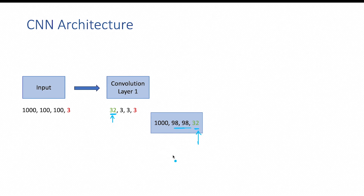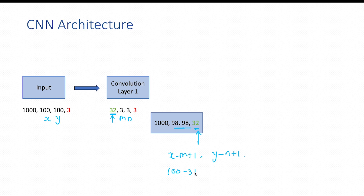The height and width of the feature maps are determined by the formula (x - m + 1) and (y - n + 1), where x and y are the height and width of the input image, and m and n are the height and width of the kernel. So 100 - 3 + 1 gives 98, resulting in feature maps of size 98 by 98. The number of input images is preserved as is. The feature map outputs are the linear combination of kernels and different localized regions of the input image data.